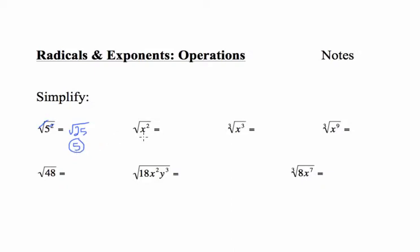The same thing happens with variables. You can cross out the square root and the squared because those are inverse operations that undo each other, so the answer is just x. Another way to think about this: if you change forms, you'd have x raised to the 2 over 2 power, which is x to the first power — again, just x.